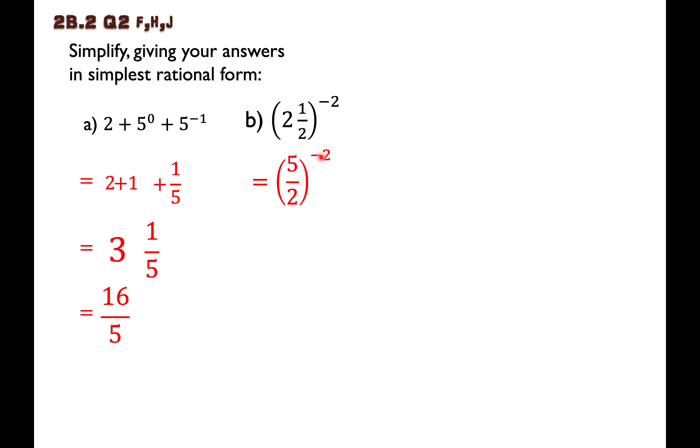Now you might remember this negative means that we're going to flip it. So instead of five over two, it will be two over five. And now it's not a negative power anymore. I keep the number, but it's not a negative power anymore.